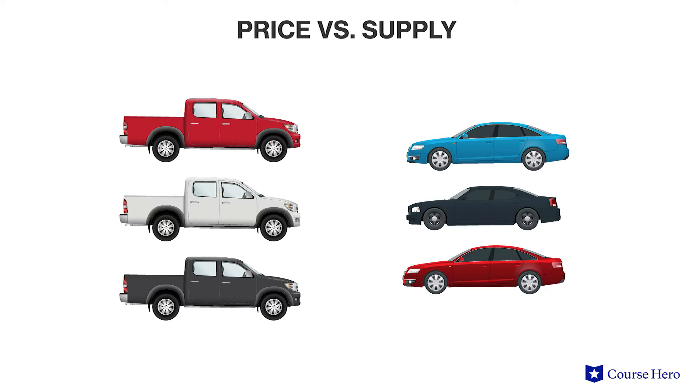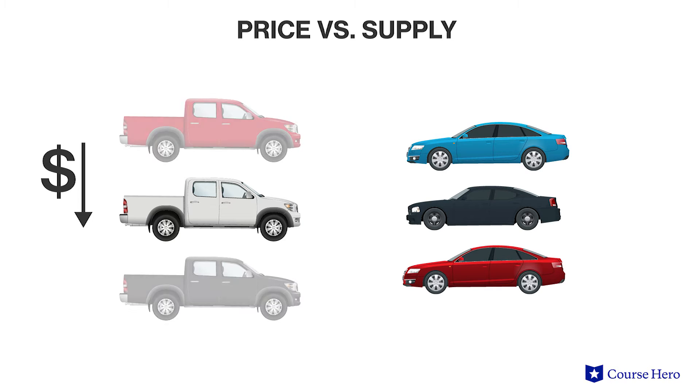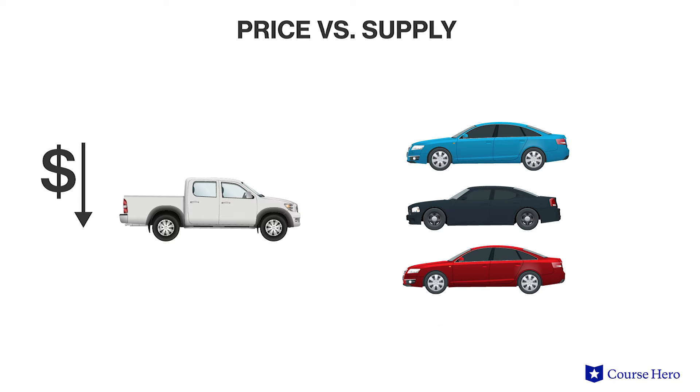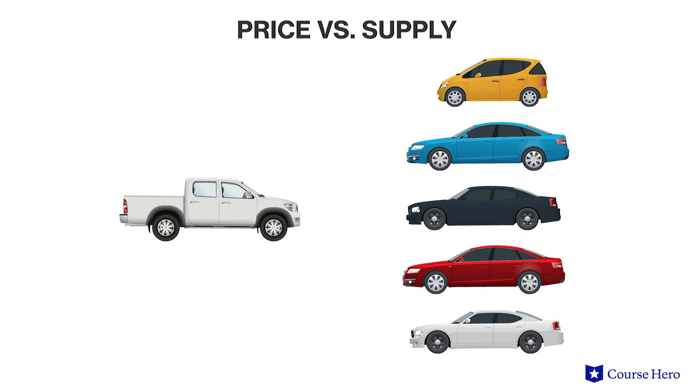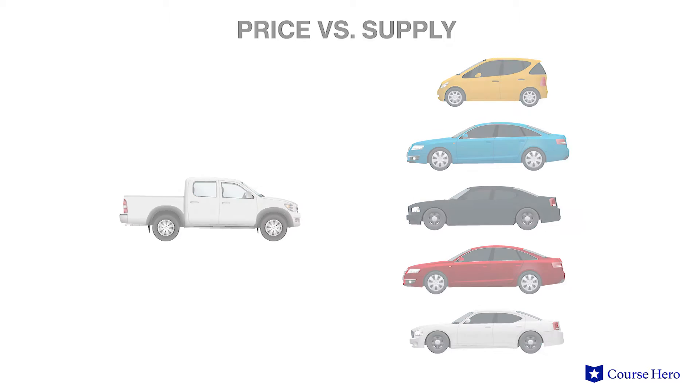Firms have multiple options of products they could sell. If the price of a substitutable item decreases, the firm will want to increase the supply of the now relatively more expensive item. For example, if an automotive company can make sedans or trucks and the price of trucks decreases, they will decrease the quantity they supply of trucks and increase the supply of sedans. Companies prefer increasing the supply of the relatively more expensive item.